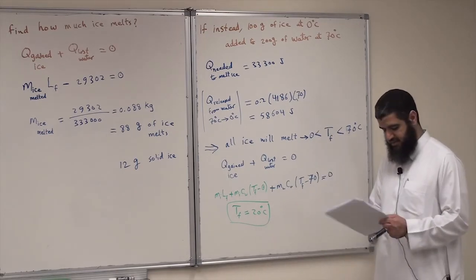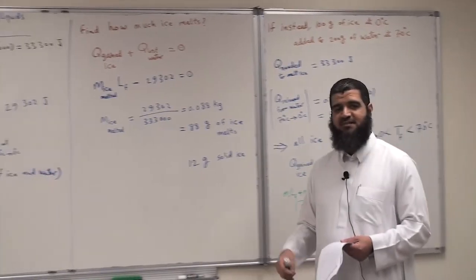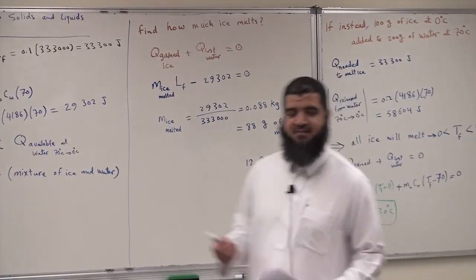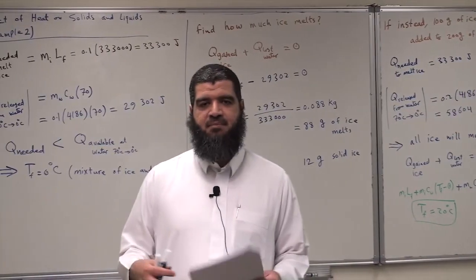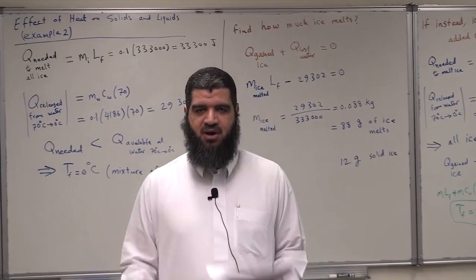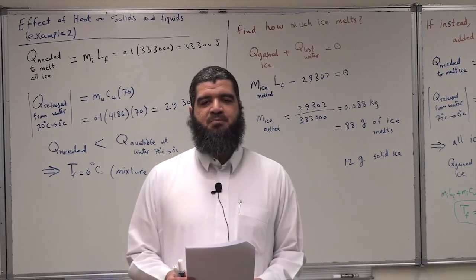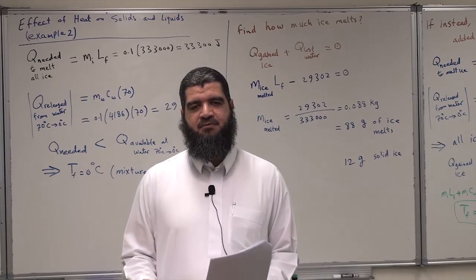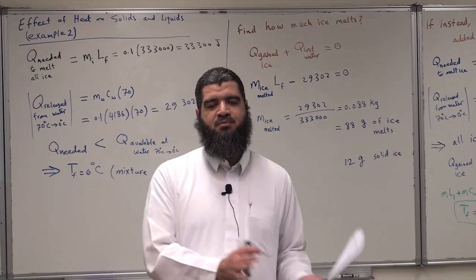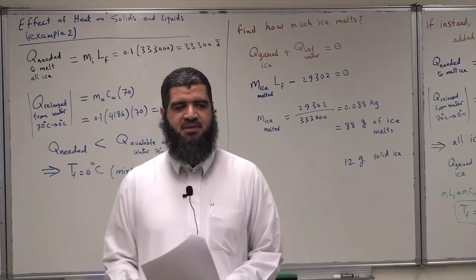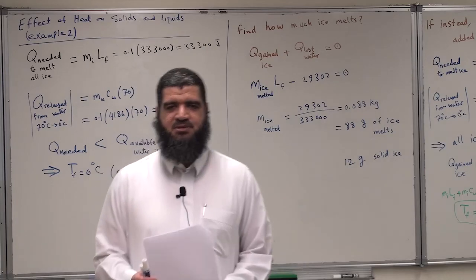In conclusion, if you have a problem where the final state of the composite is in doubt, you must make the necessary pre-judgment before applying the formula: heat gained by one component plus heat lost from the other equals zero. With my best wishes — thank you.